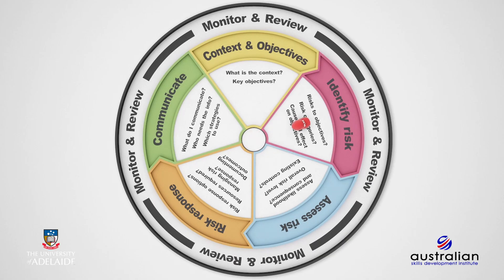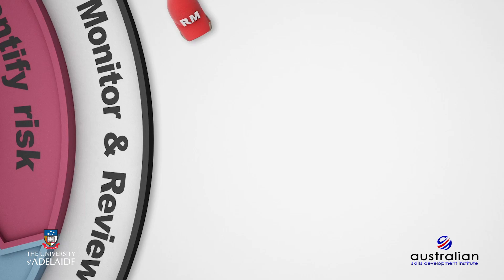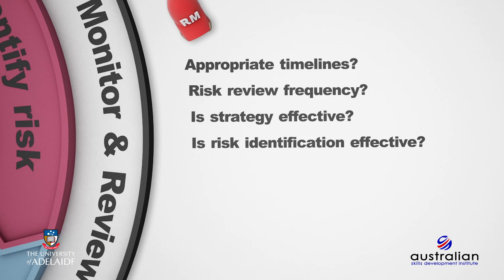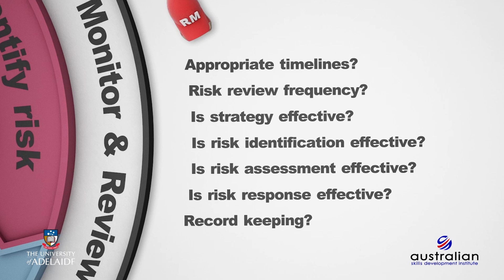The final stage of the process is that of monitor and review. We have placed monitor and review as a continuous circular activity that occurs at each stage throughout the process, highlighting the importance of monitoring and reviewing risk management throughout the lifecycle of the project. Things will change as you move through the project lifecycle. Therefore, to be effective, the risk management process must remain dynamic. Key questions when monitoring and reviewing the process include: what are the timelines I need to consider? How often do I review and revise the risk work undertaken? How effective is our risk management strategy? How effective is the risk identification process? How accurate and effective is risk assessment? Have risk response methods been effective? What records do I need to keep? And are safety procedures being followed?